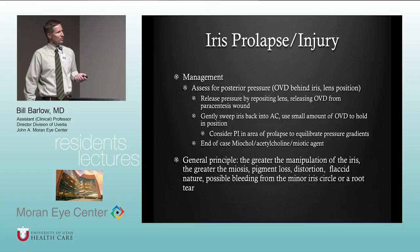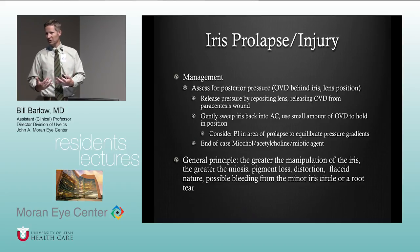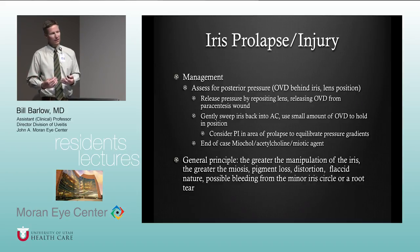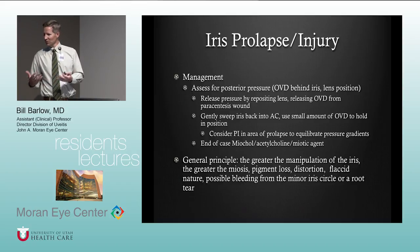At the end of the case, a miotic agent can help constrict the pupil and reduce the risk of iris prolapse. The principle is: the greater the manipulation of the iris, the greater the miosis, pigment loss, distortion, flaccidity, and possible bleeding from the iris root. If it's being manipulated multiple times, think about something more definitive — a PI, an iris hook — before it gets so damaged that you have to abandon the wound, move to a different wound, or end up with a significant problem requiring secondary surgery or an iris replacement device.